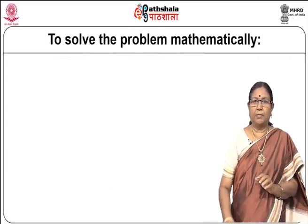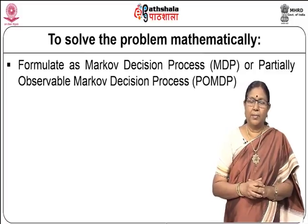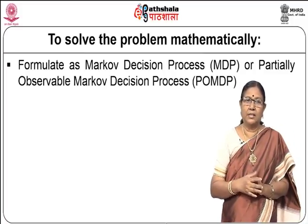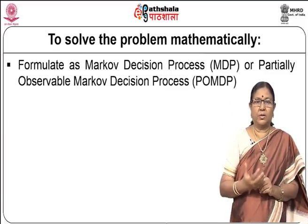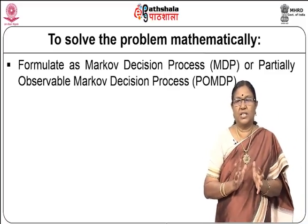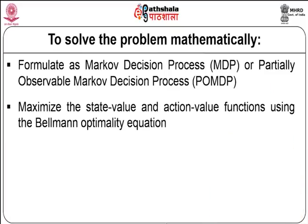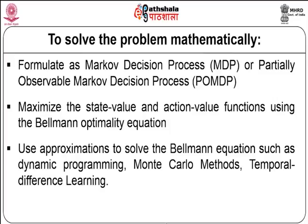To solve this problem mathematically, we formulate it as a Markov decision process (MDP) or a partially observable Markov decision process (POMDP). We try to maximize the state value and action value functions using the Bellman optimality equation, using approximations to solve it. Methods include dynamic programming, Monte Carlo methods, and temporal difference learning.